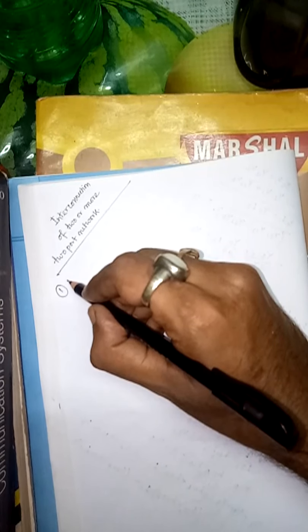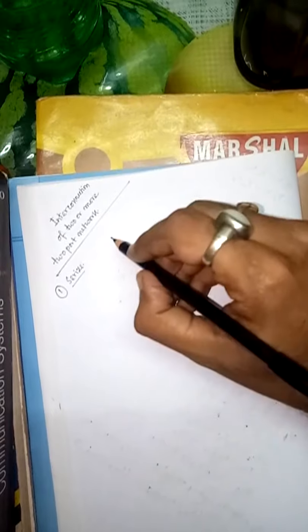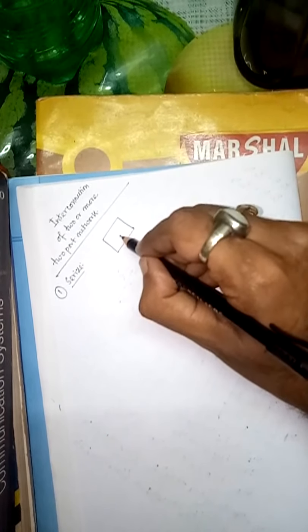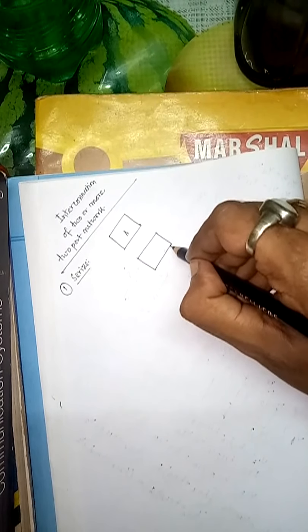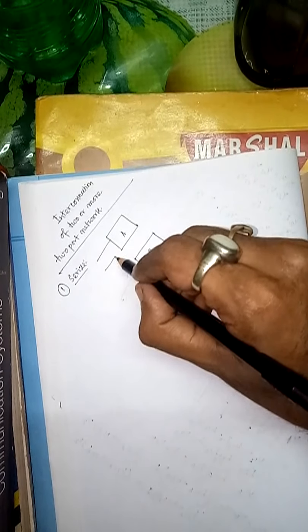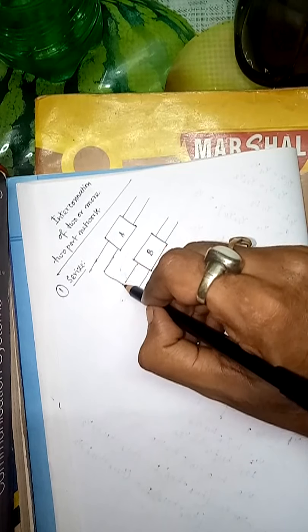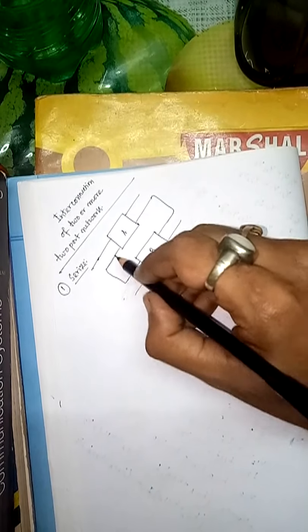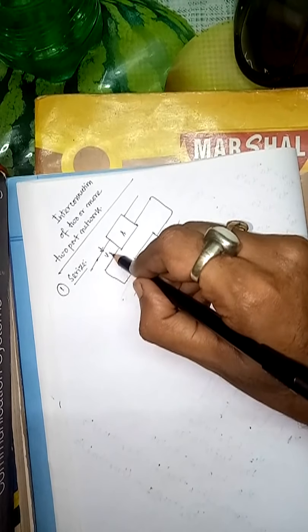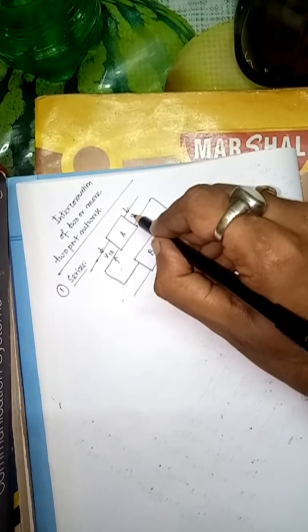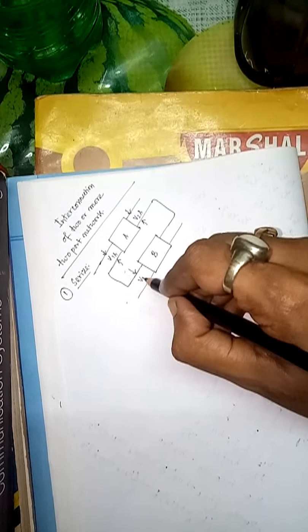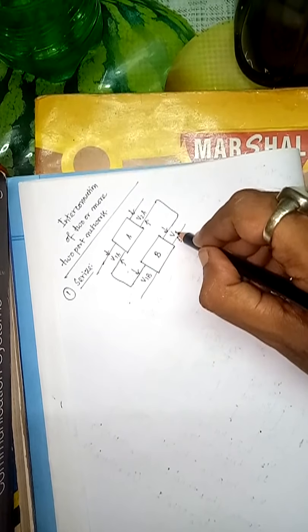Number one is called series connection. In the series connection, suppose this is one two-port — this is A — and this is another two-port — this is B. They are having their ports. If they are series connected, this two is connected with this and these two are connected in this way. So if this is V1a and V2a, and if this is V1b and V2b.